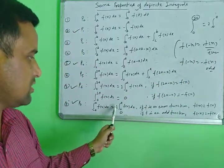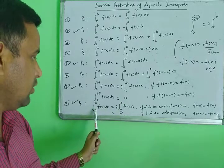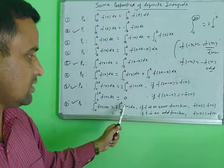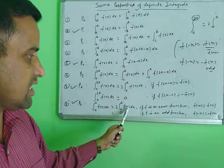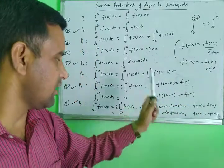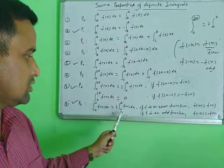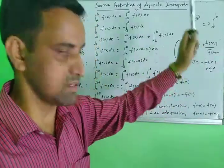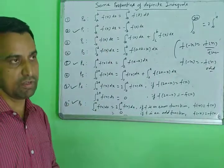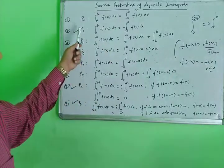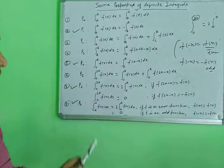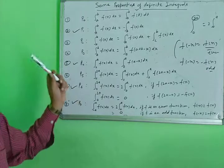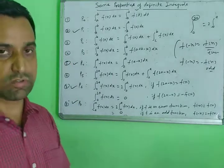When f(minus x) equals f(x), the function is even, and the result is 2 times the integral from 0 to a of f(x) dx. When f(minus x) equals minus f(x), the function is odd, and the result is 0. Properties P1, P4, P6, and P7 are the most useful and frequently used in questions.